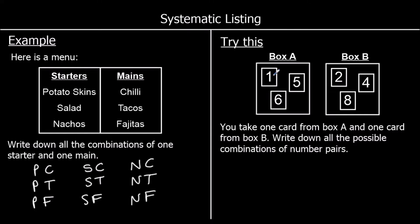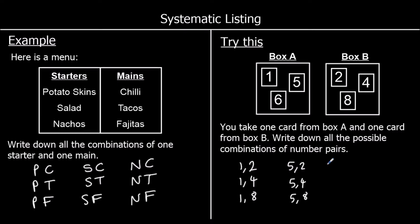So if we took one first, we could get one and two, one and four, and one and eight. If we took five, we get five and two, five and four, five and eight. And if we got six, it would be six and two, six and four, and six and eight. So there are three options for one first, three options for five first, and three options for six first — so they are all of our options.